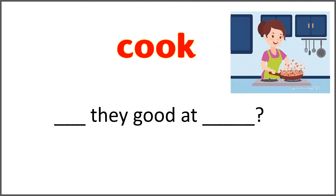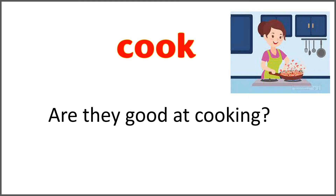The given word is 'cook.' Use it with 'are' to complete this sentence: 'blank, are they good at blank?' Are they good at cooking? From the picture it looks like they are good at cooking. The lady in the picture is smiling and the food looks good.